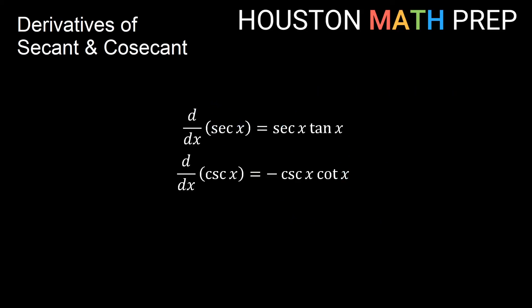So these are similar. You can see when we take the derivative of secant, we get secant and tangent. When we take the derivative of cosecant, we get cosecant and cotangent, but we have a negative here. So we get the co-functions here, and we get a different sign when we have cosecant than when we have secant.